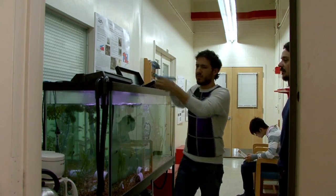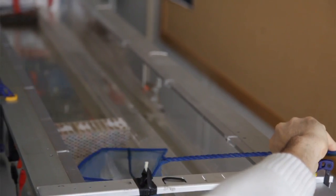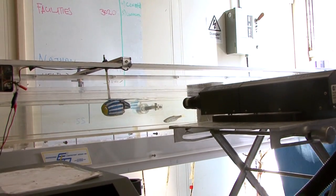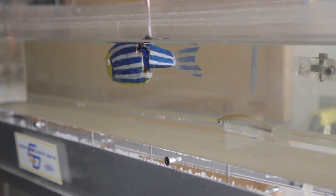Porfiri, or one of his grad students, puts the robot and a real fish in a water tunnel, where the water flow and the robotic tail speed can be controlled.